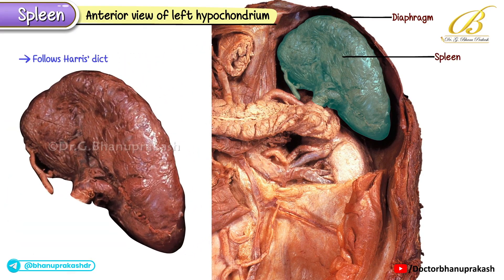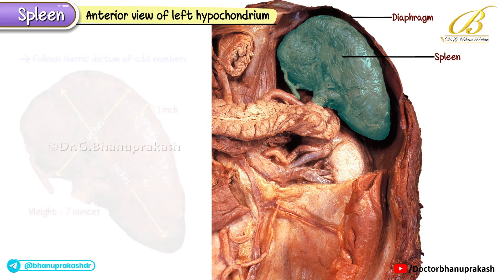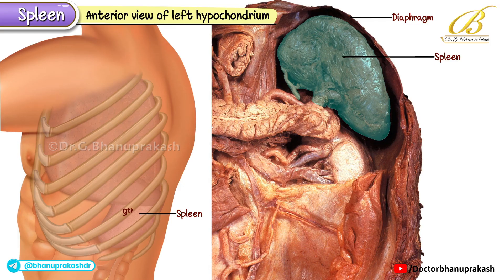The spleen follows Harris's dictum of odd numbers. It is approximately one inch thick, three inches broad, and five inches long, weighing around seven ounces. It lies deep to the ninth, tenth, and eleventh ribs.